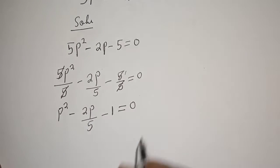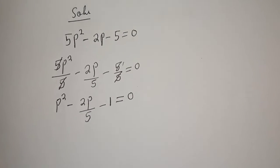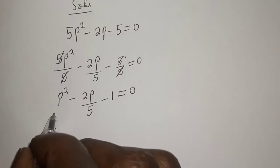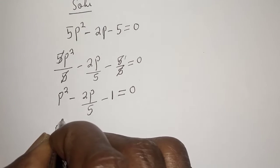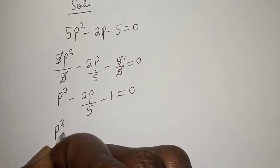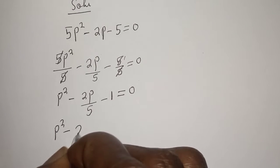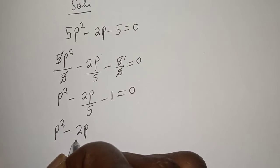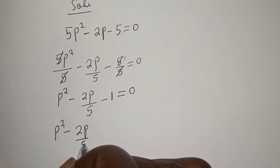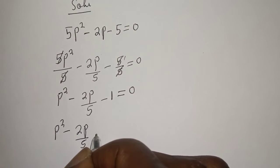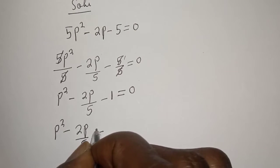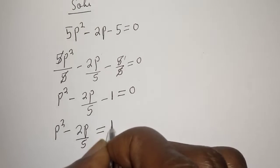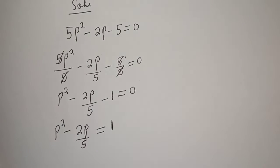Let's take the constant to the other side. We have p squared minus 2p over 5 is equal to 1.